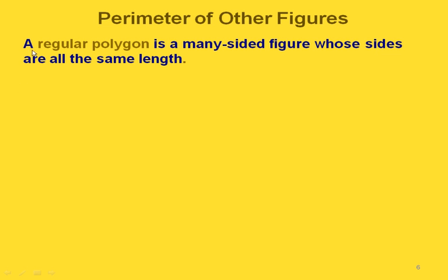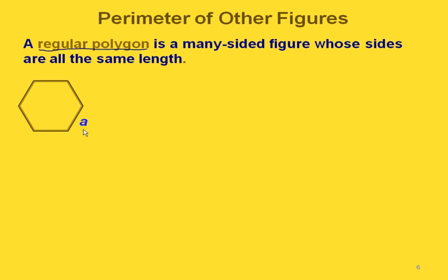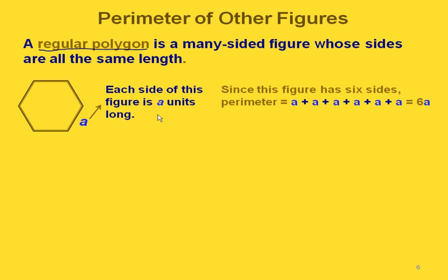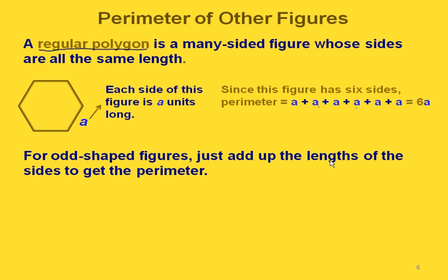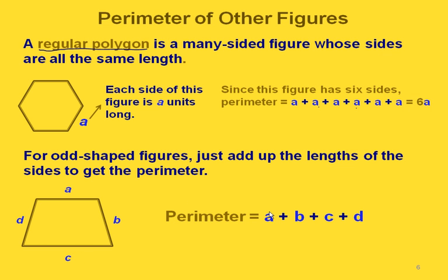Now one figure you will see in the homework is called a regular polygon. This is a many-sided figure whose sides are all the same length — it could be a triangle, a square, a pentagon, a hexagon, and so on. In this picture we have a hexagon because it has six sides. If this is a regular polygon, we only need to know the length of one side to find the perimeter. Each side is A units long, so the perimeter would be six times A. For other figures like a trapezoid, we just add up the lengths of all four sides to get the perimeter.